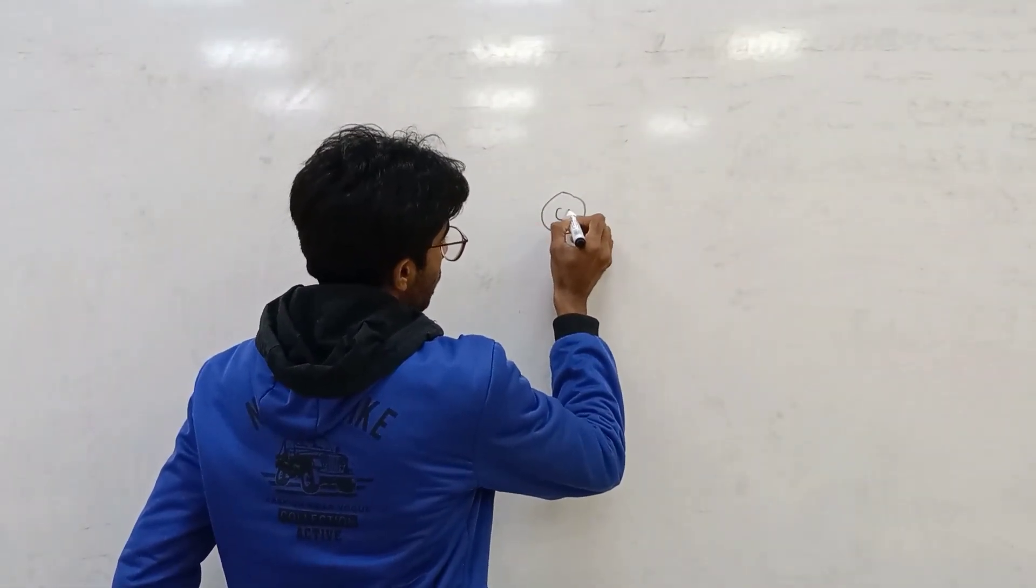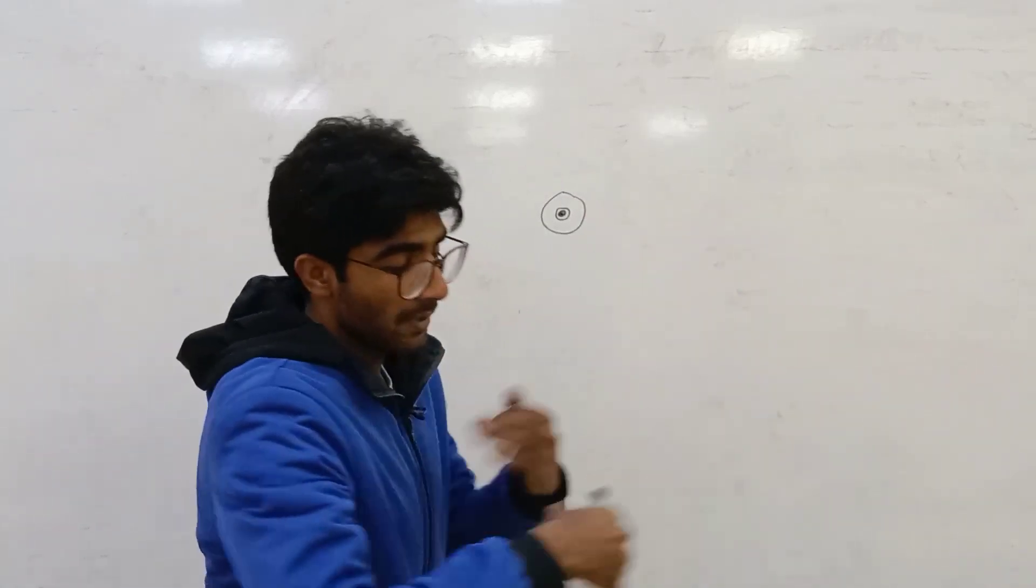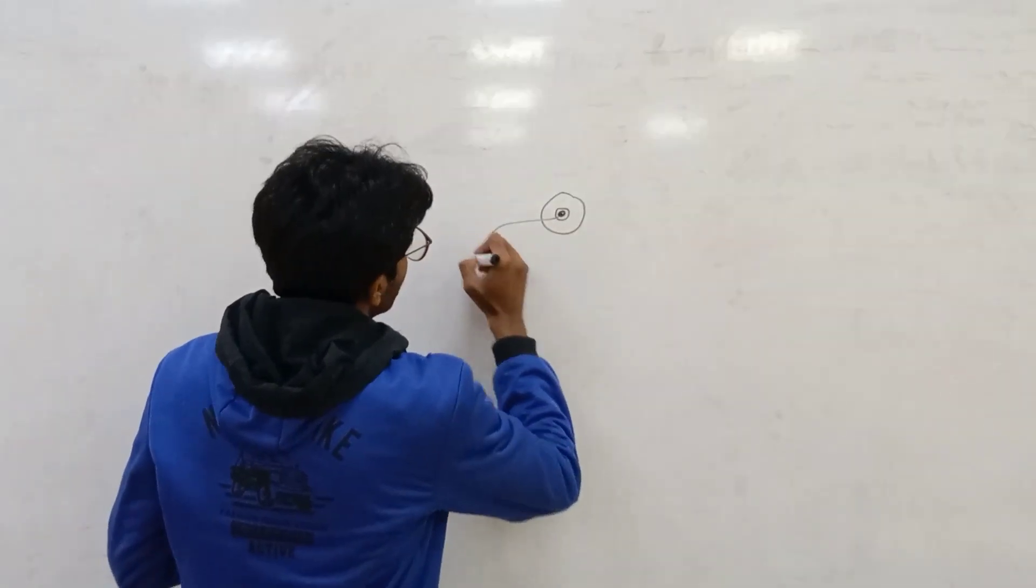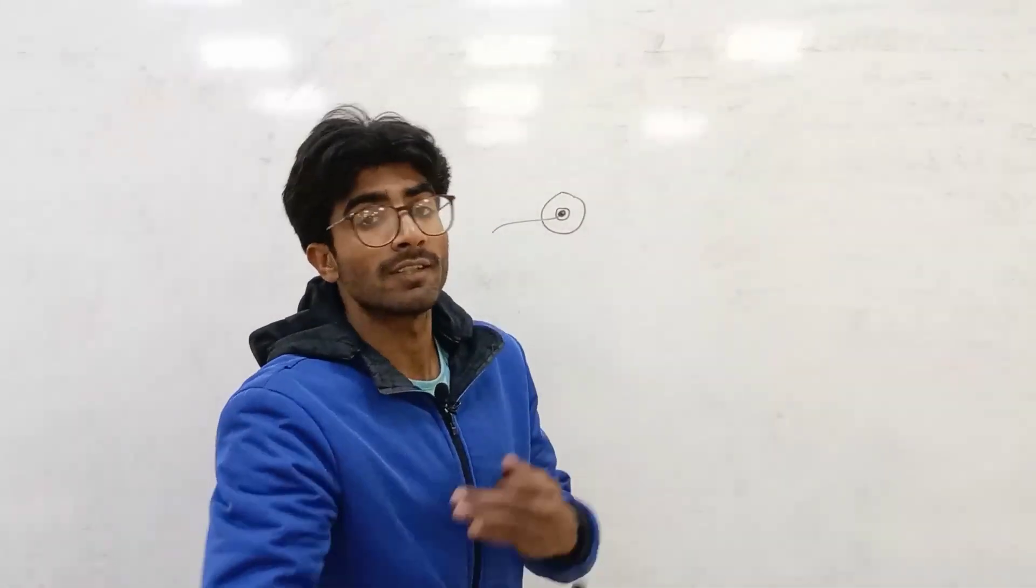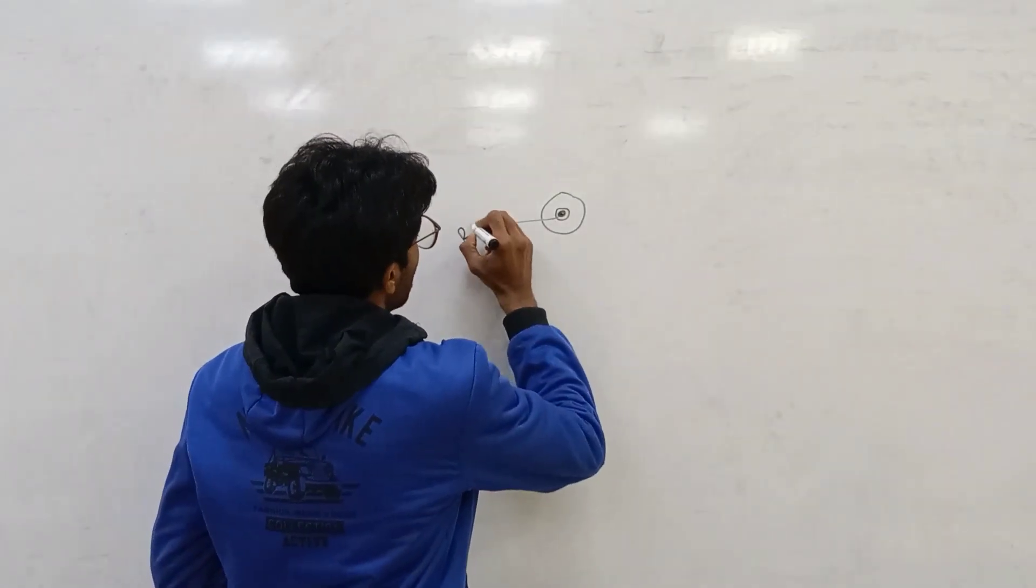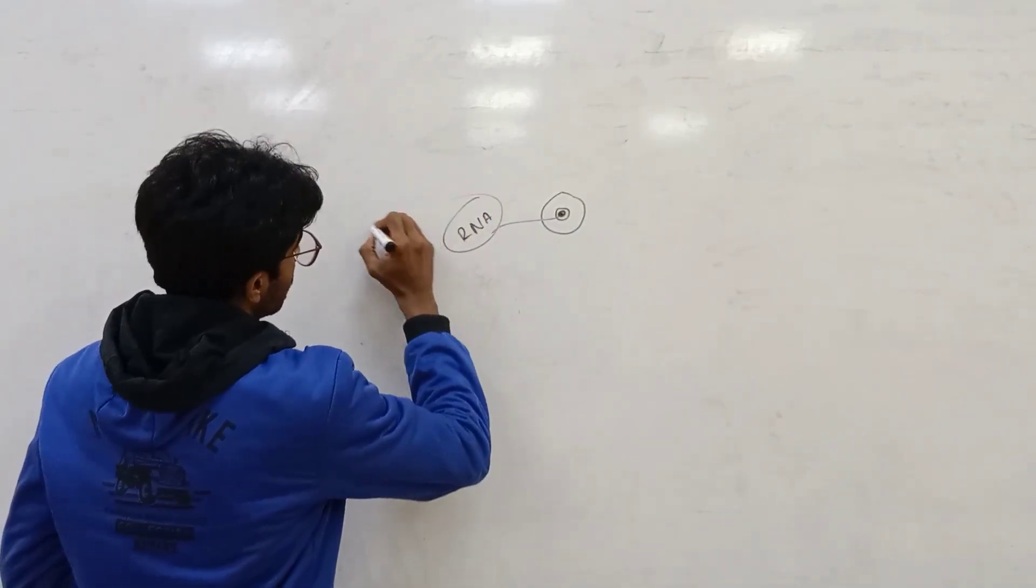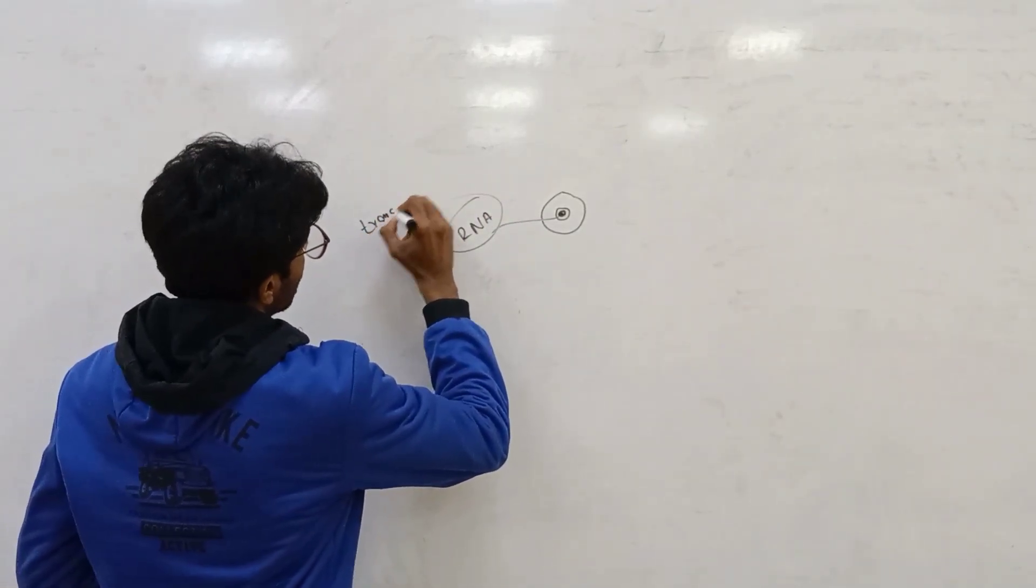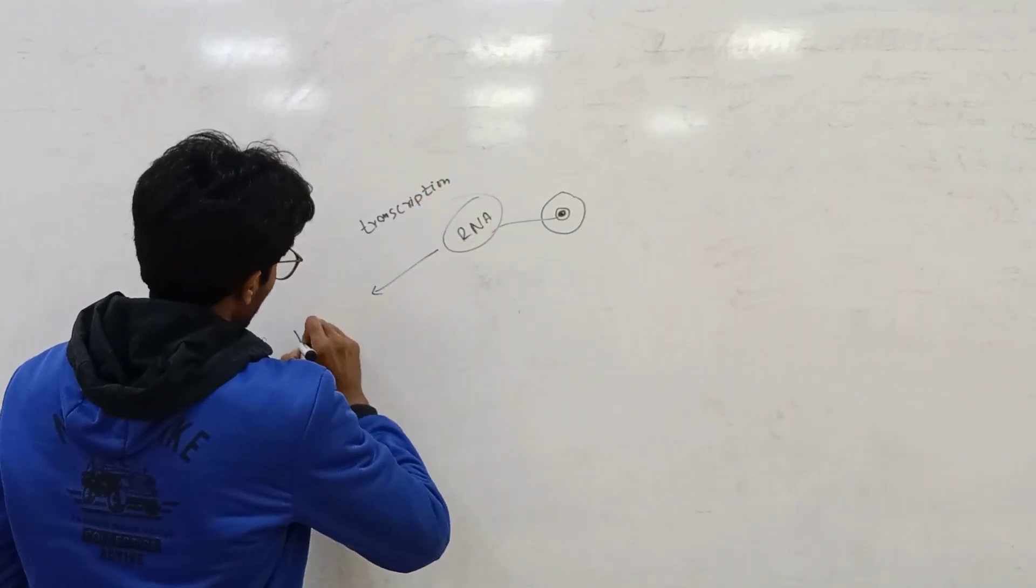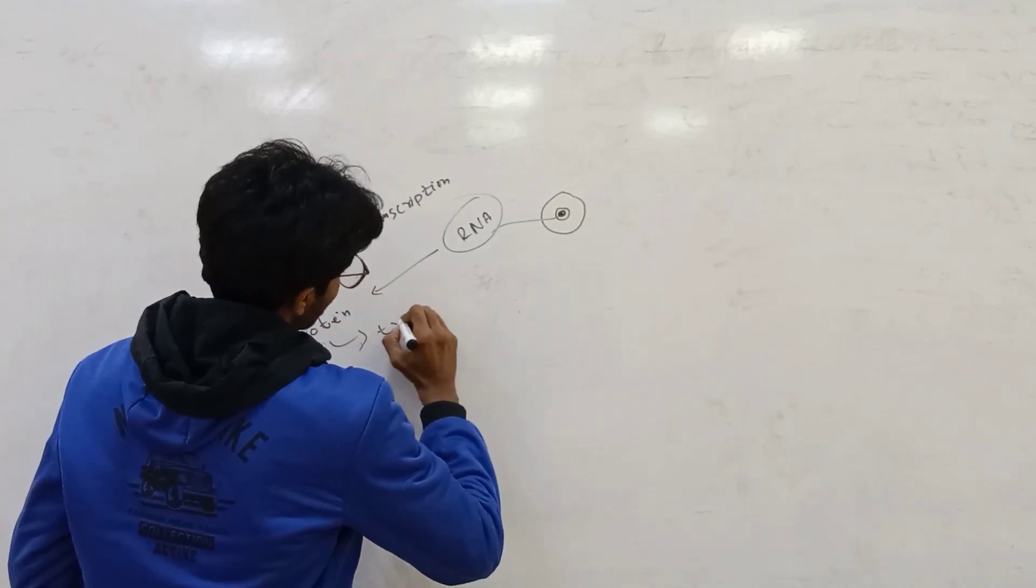In our cell and nucleus, when the genes function happens, it means there is replication, there is translation, transcription. Formation of RNA, this is known as transcription. From RNA to protein production, this is known as translation.